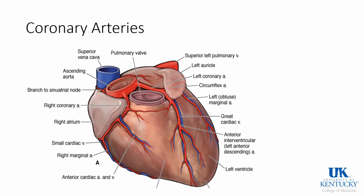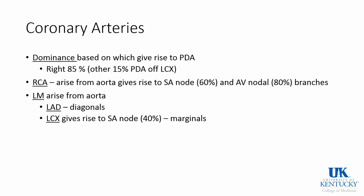There are several arteries that supply oxygen to the heart and these are called the coronary arteries, and they originate from your aorta at the sinus of Valsalva. This image demonstrates your right coronary artery going down the right ventricle and supplying the inferior wall, as well as the left anterior descending artery coming off the left main and the left circumflex artery. All these arteries have branches as well.